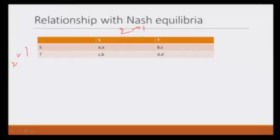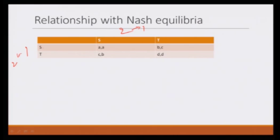In evolutionary game theory, what we are saying is that an evolutionary stable strategy is one that survives the invasion from any mutation. So if S is the evolutionary stable strategy, then we can think of a corresponding strategy profile as (S, S), to which we will compare the Nash equilibrium.